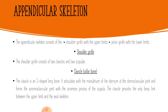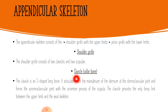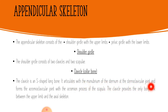Starting with the appendicular skeleton: the appendicular skeleton consists of the shoulder girdle with the upper limbs, and the pelvic girdle with the lower limbs. The shoulder girdle consists of two clavicles and two scapulae. The clavicle, also called the collarbone, is a roughly S-shaped long bone. It articulates with the manubrium of the sternum at the sternoclavicular joint and forms the acromioclavicular joint with the acromion process of the scapula.